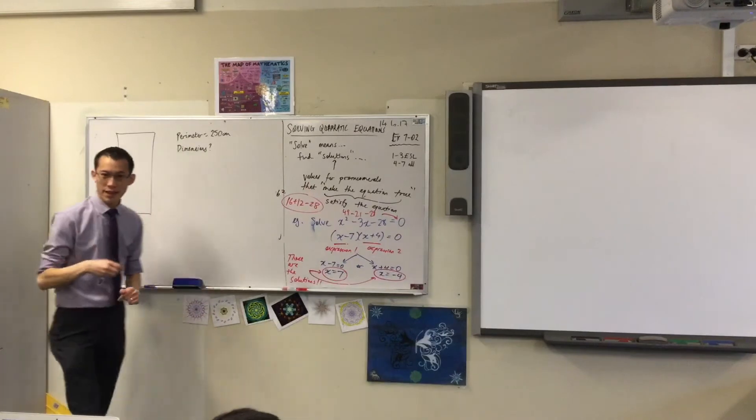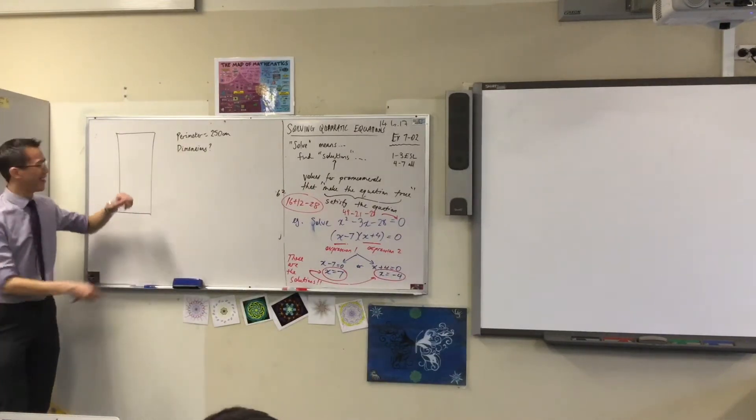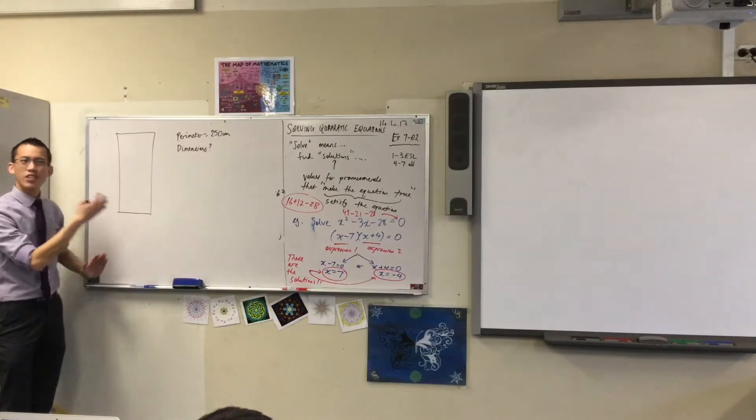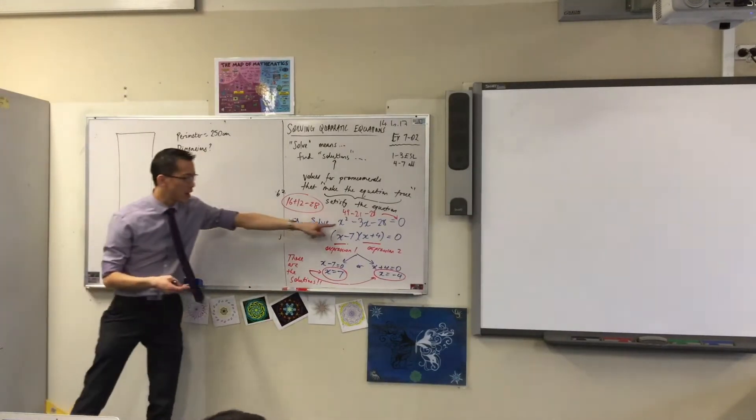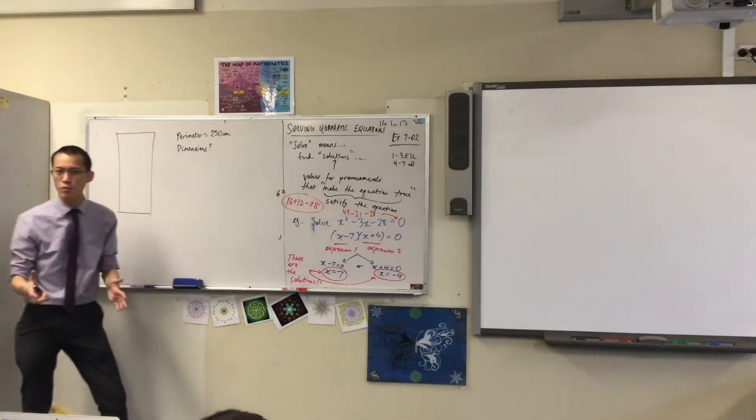I've drawn the rectangle, and we are told that the length is four times the width. So, just like we have over here, let's put some labels, let's put some pronouns on here to help us.